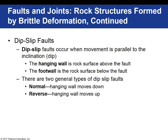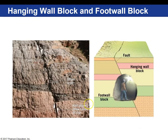A normal fault is where the hanging wall moves down relative to the foot wall. A reverse fault is just the opposite — the hanging wall moves up relative to the foot wall. In this first image, here is the fault going through the rock. This occurs when rock behaves in a brittle manner, so this is near the earth's surface — the rock is not going to behave in a ductile fashion like with folds and domes and basins. Here is the fault plane. You can see the offset in this rock layer, so we can identify that this block moved down relative to this block.